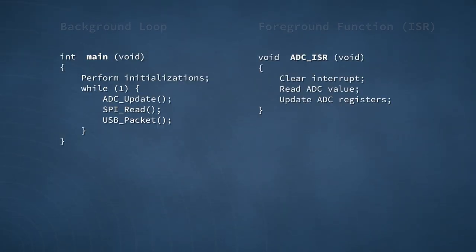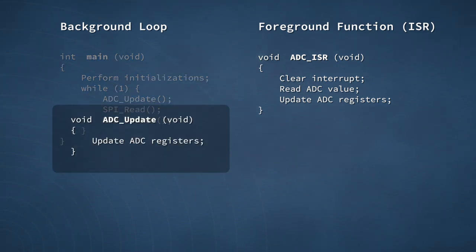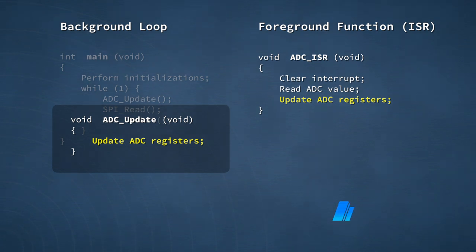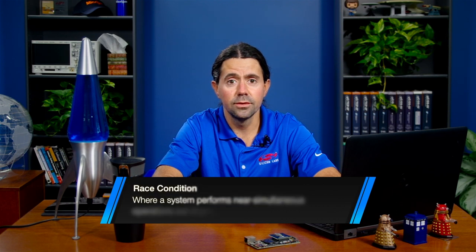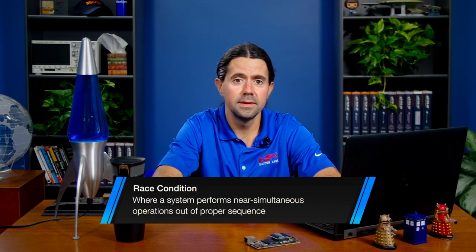This is true in both kernel-based applications and foreground-background systems. Let's imagine a foreground-background system incorporating two functions that access an A-to-D converter — a foreground function or interrupt handler, and a background function. Unless written to disable interrupts, the background A-to-D function can easily be interrupted by its counterpart in the foreground. The likely result would be an unexpected combination of A-to-D register values along with unexpected behavior from the A-to-D converter itself. This kind of issue is referred to as a race condition — because the resulting behavior is dependent on the relative timing of the pieces of code involved.